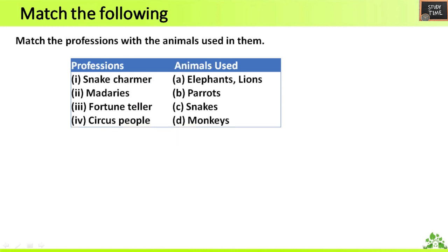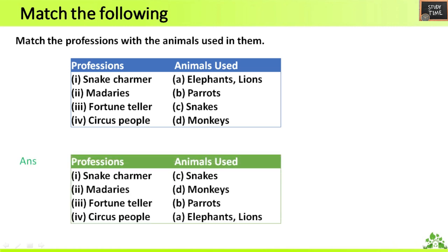Next, match the professions with the animals used in them. Snake charmer is matched with snakes. Madaris are matched with monkeys. Fortune teller is matched with parrot. Circus people are matched with elephants and lions.